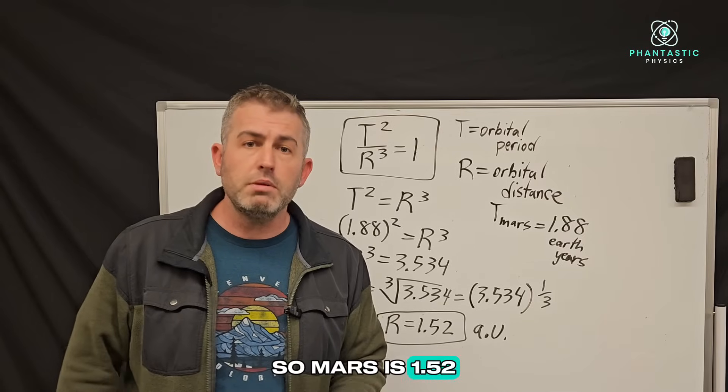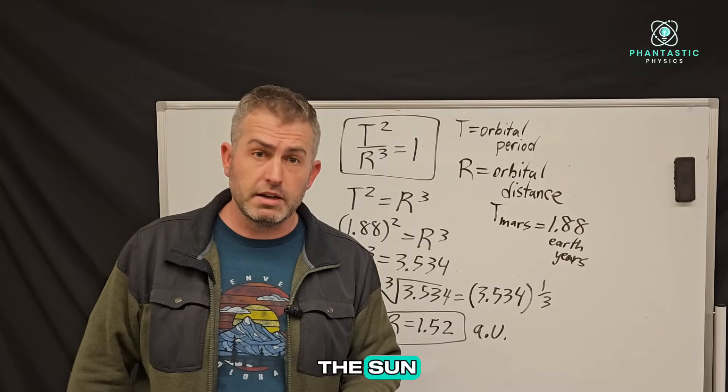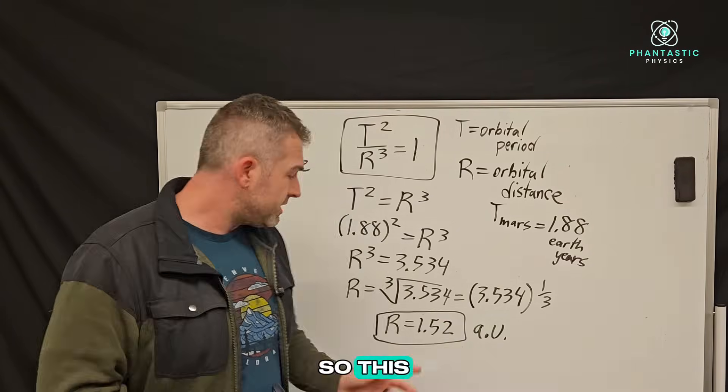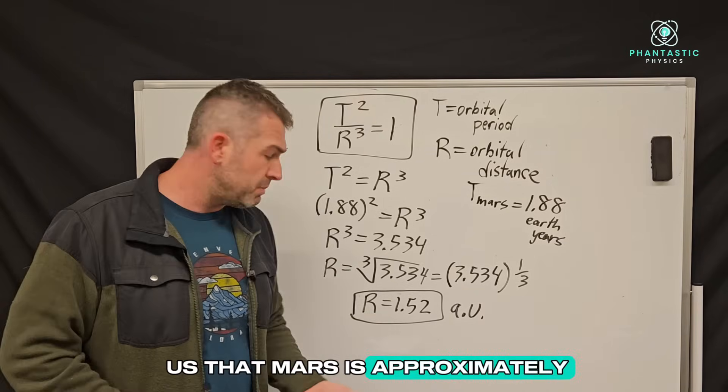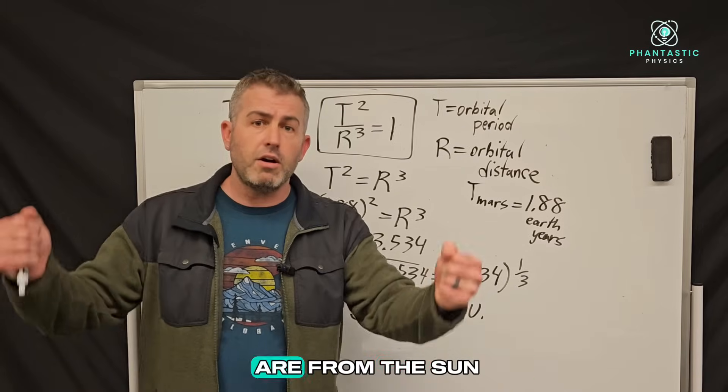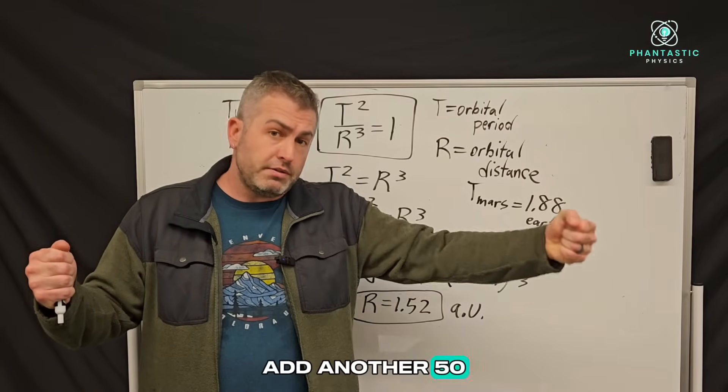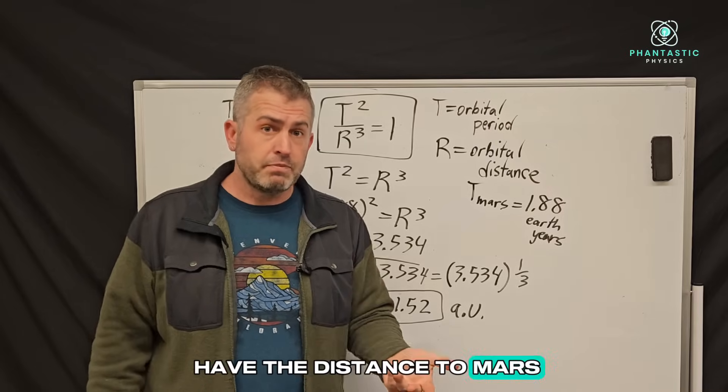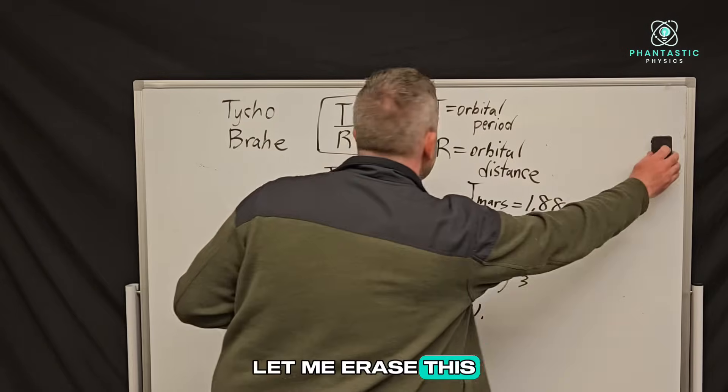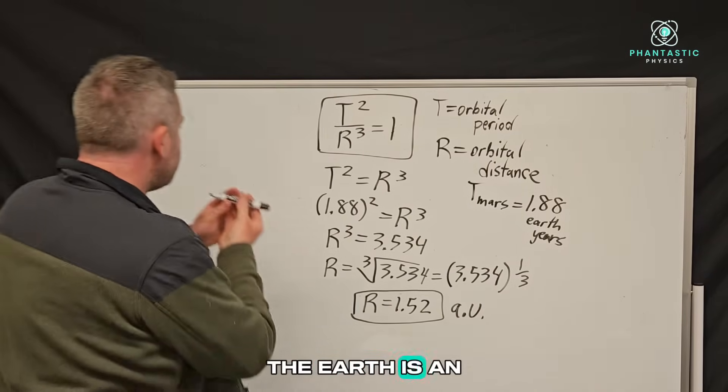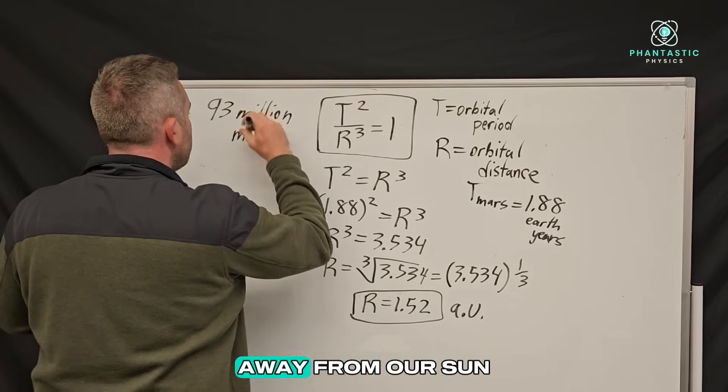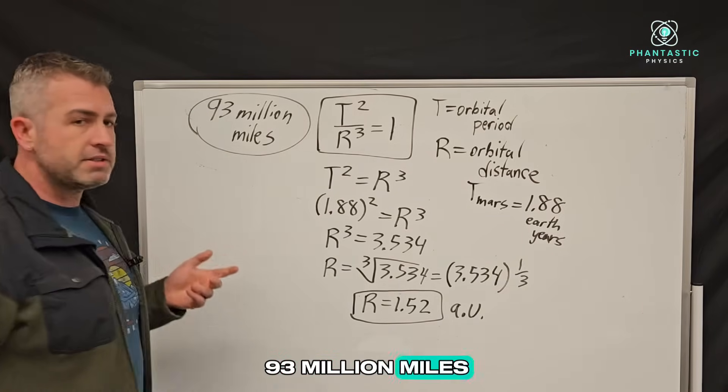And remember, this is measured in AU, astronomical units. So Mars is 1.52 astronomical units away from the sun. What does that mean? Remember, an astronomical unit is an earth distance away. So this answer is telling us that Mars is approximately one and a half times further from the sun than the earth is. So whatever distance we are from the sun on average, add another 50% and you basically have the distance to Mars. So how far away is the earth from the sun? Well, we actually know this number.